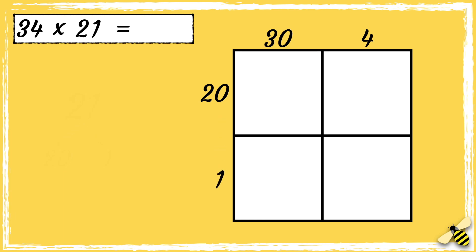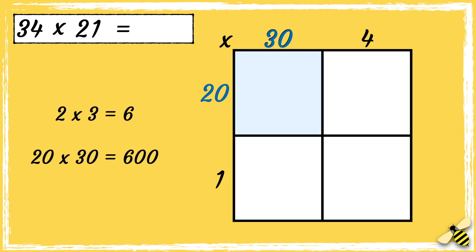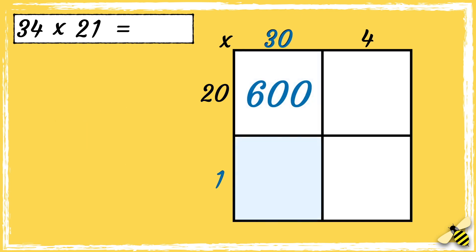Now that we're set up, we're ready to multiply. Let's start with 20 multiplied by 30. We know that 2 times 3 is 6, so we can use related facts to know that 20 times 30 is 600. Now we can work out 1 times 30, which is 30.